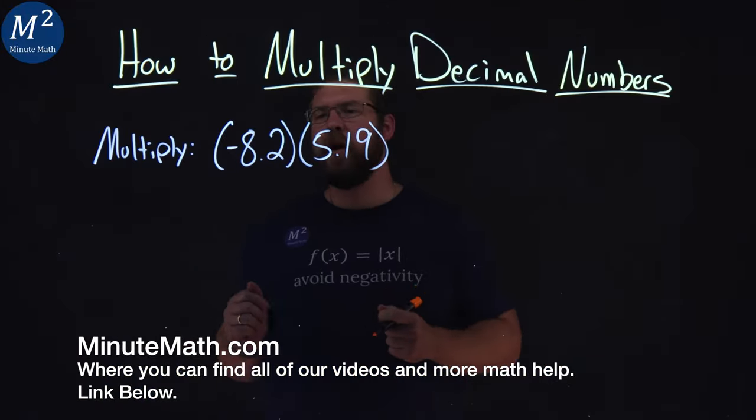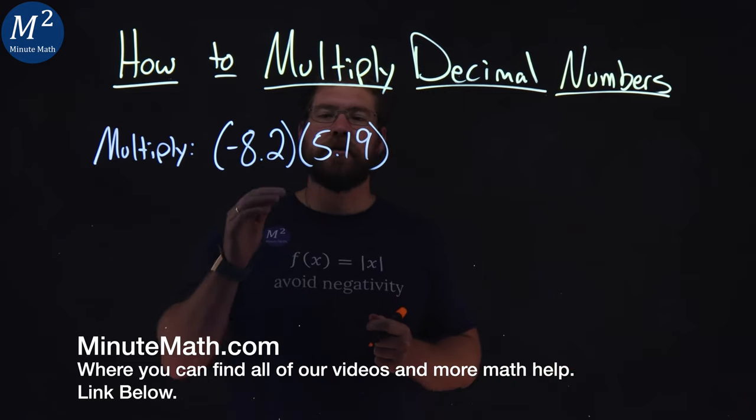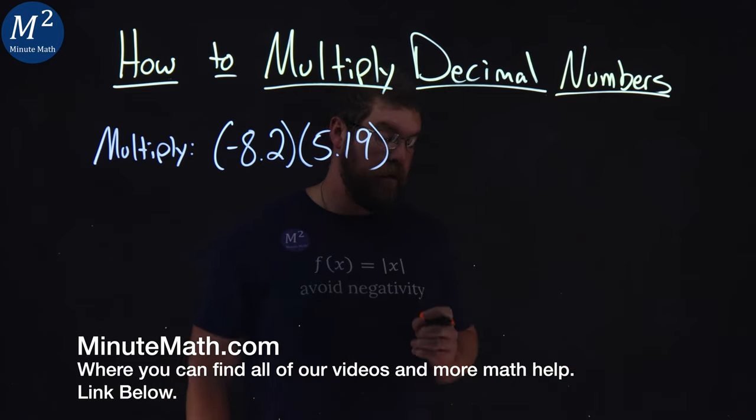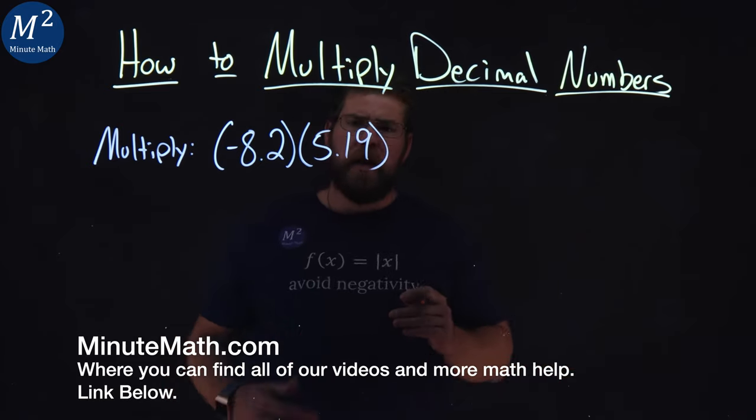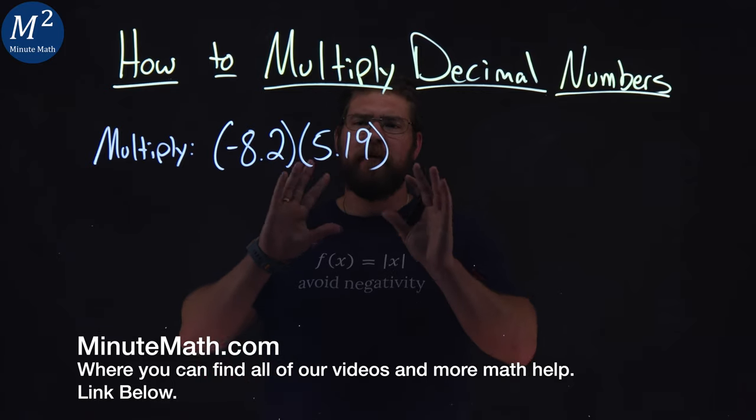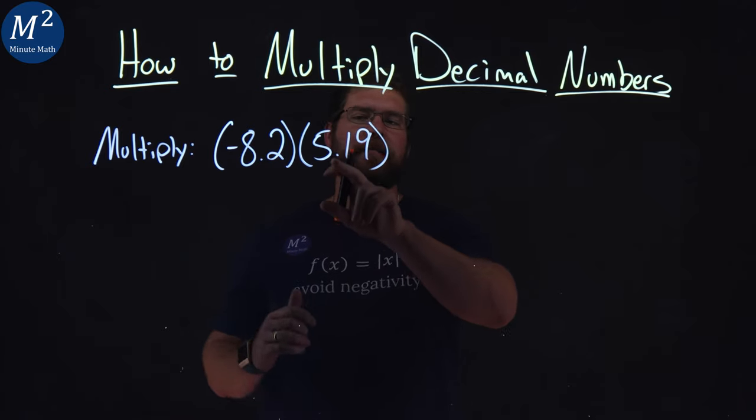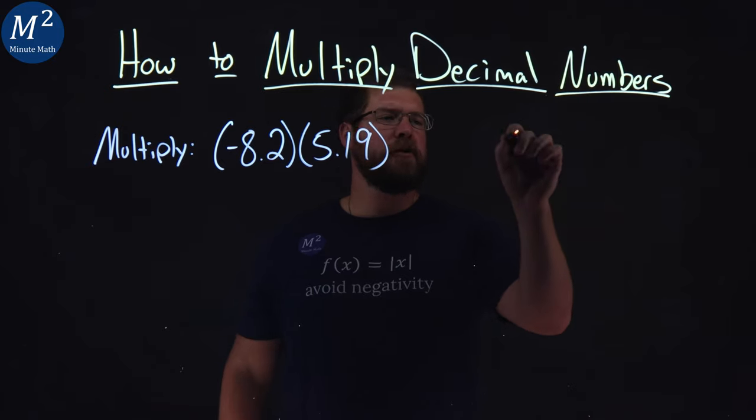We're given this problem right here, negative 8.2 times 5.19. Now when I multiply this out, I'm going to first identify which number is longer, and that's the 5.19, and I usually put that up top.